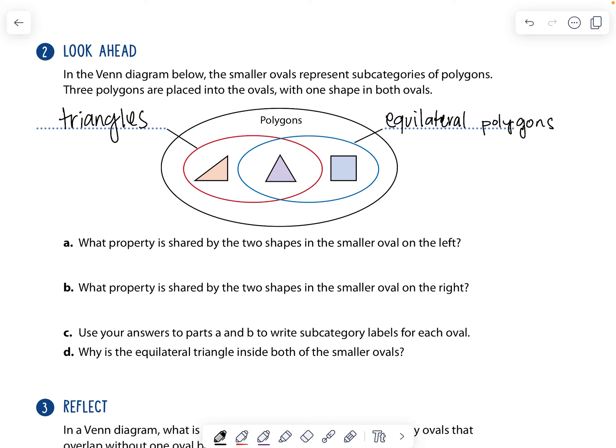What property is shared by the two shapes in the smaller oval on the left? So it's talking about this oval. So a property that is shared is that they have three sides. What property is shared by the two shapes in the smaller oval on the right? This one.